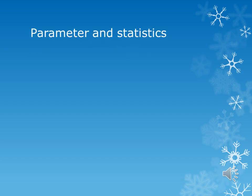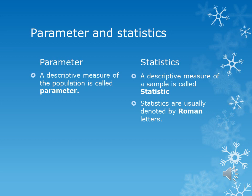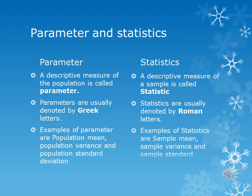Parameter and statistics: a parameter is a descriptive measure of a population, while a statistic is a descriptive measure of a sample. Parameters are usually denoted by Greek letters and statistics are usually denoted by Roman letters. Population mean, population variance, and population standard deviation are examples of parameters. Sample mean, sample variance, and sample standard deviation are examples of statistics.